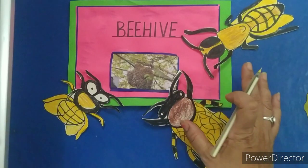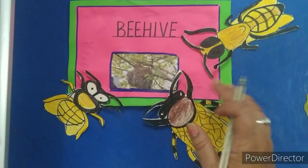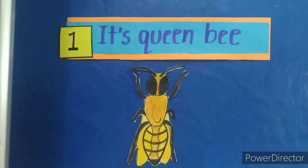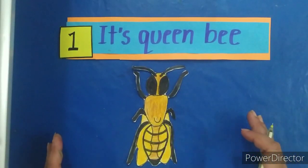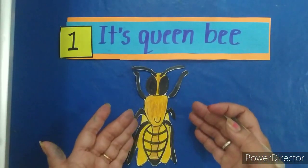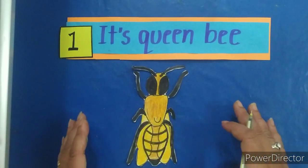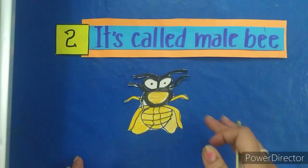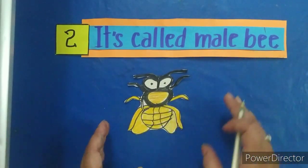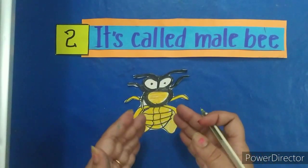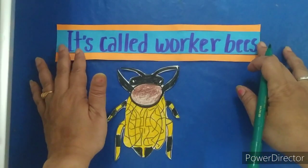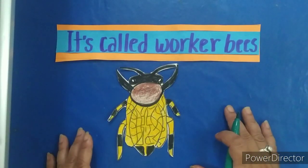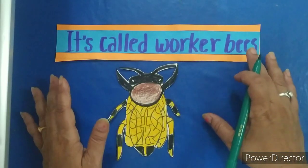There are three types of bees that live in the house. In every beehive there is a queen bee. Its size is bigger than the rest of the bees. The queen bee lays eggs. Second is the male bee, which helps the bee to reproduce. And the third are called worker bees. They make beehives and also prepare honey from the nectar of flowers.